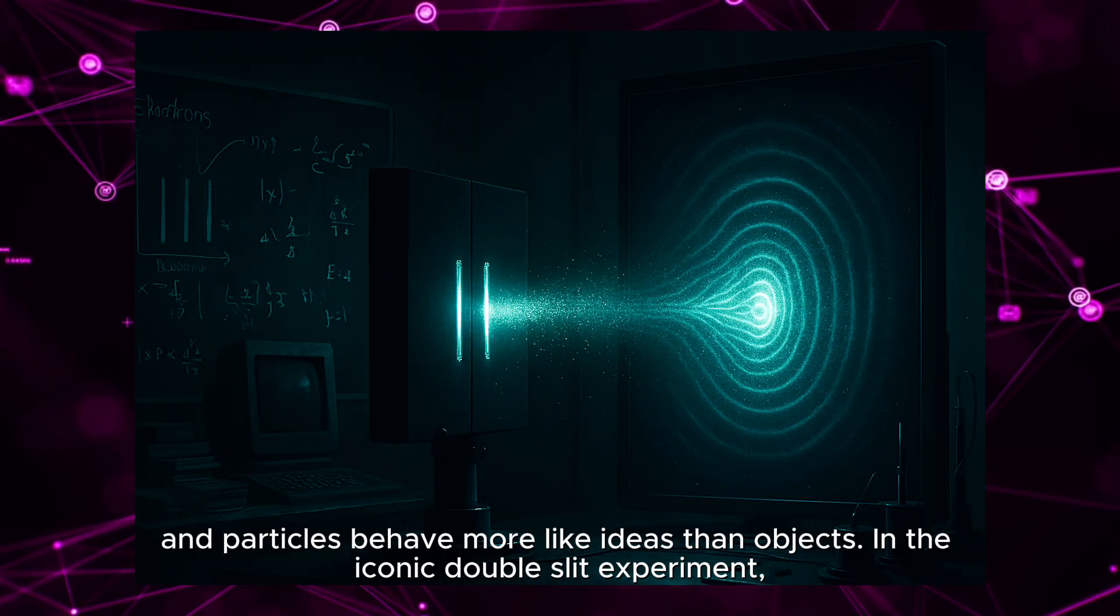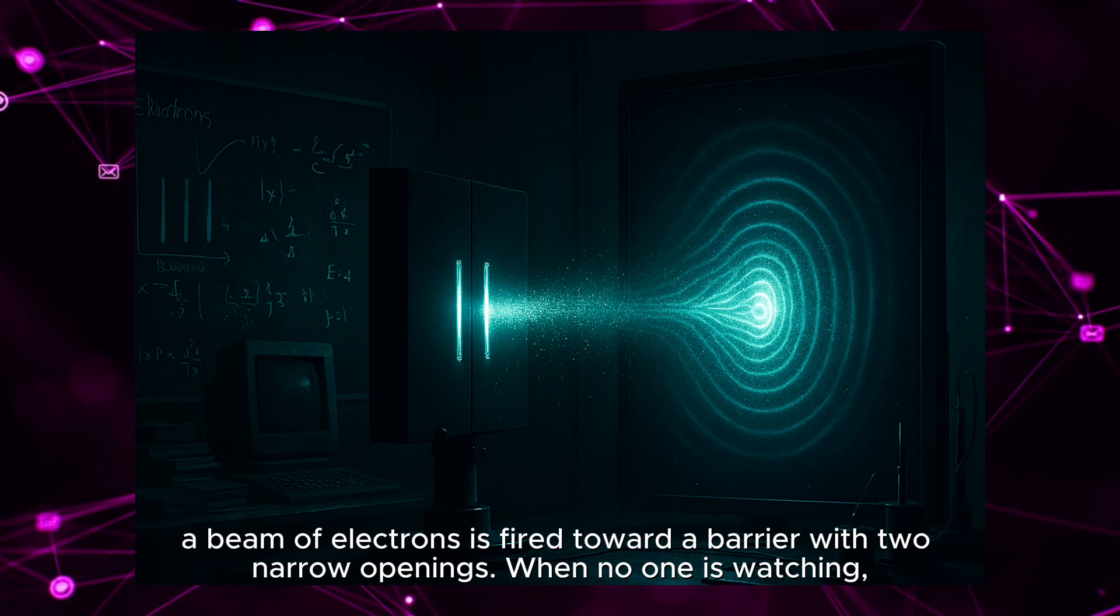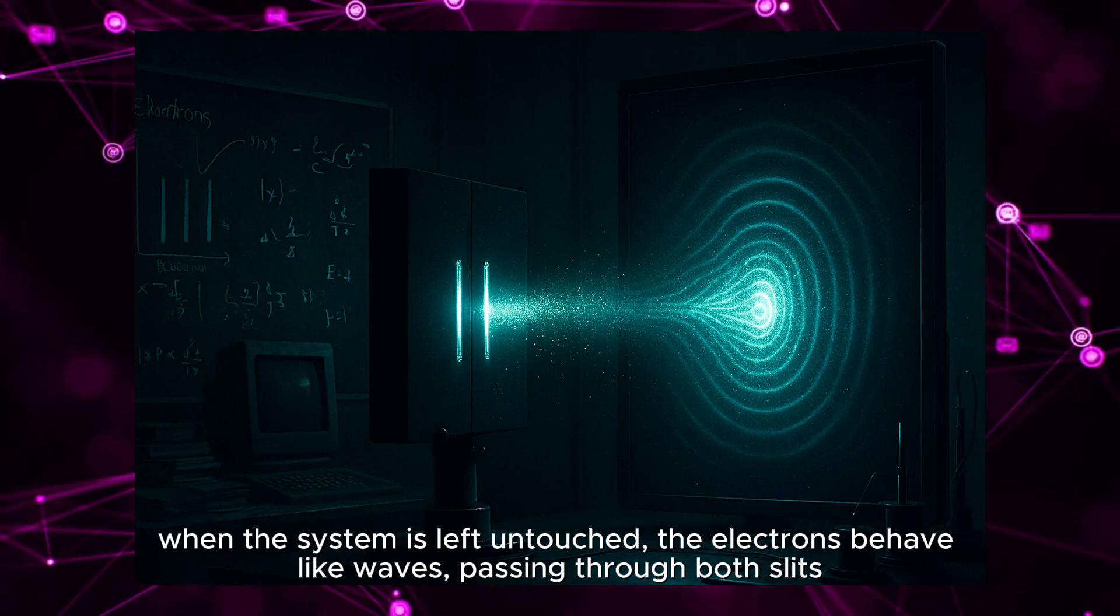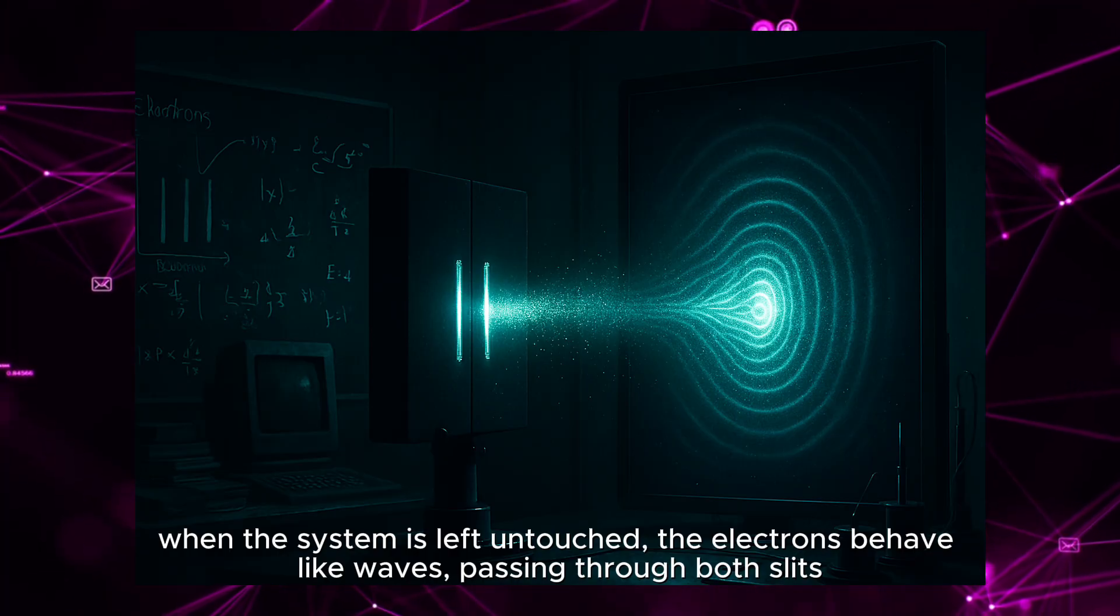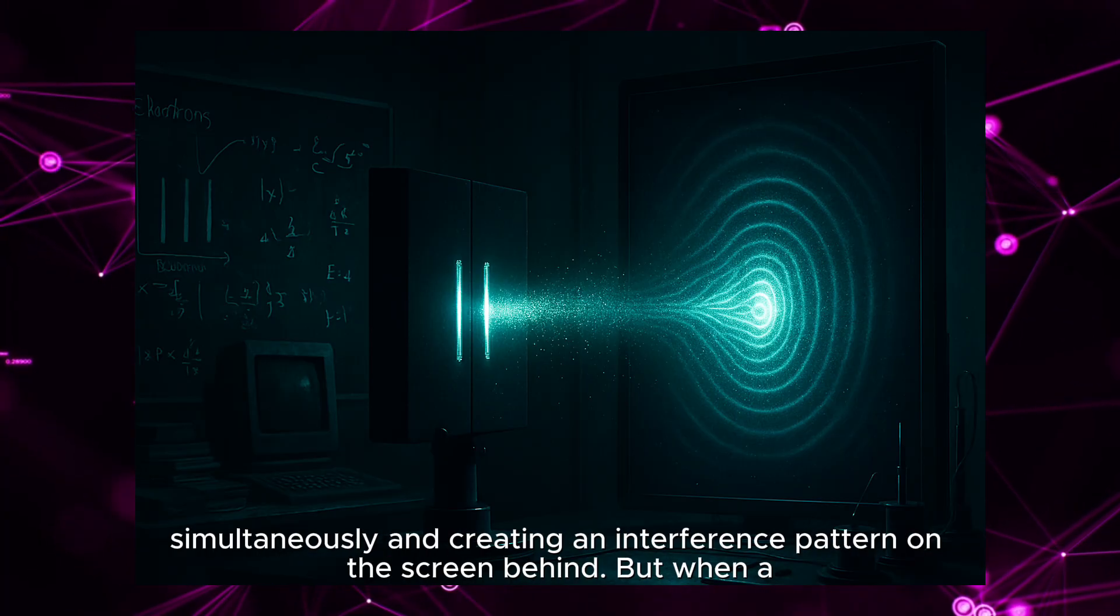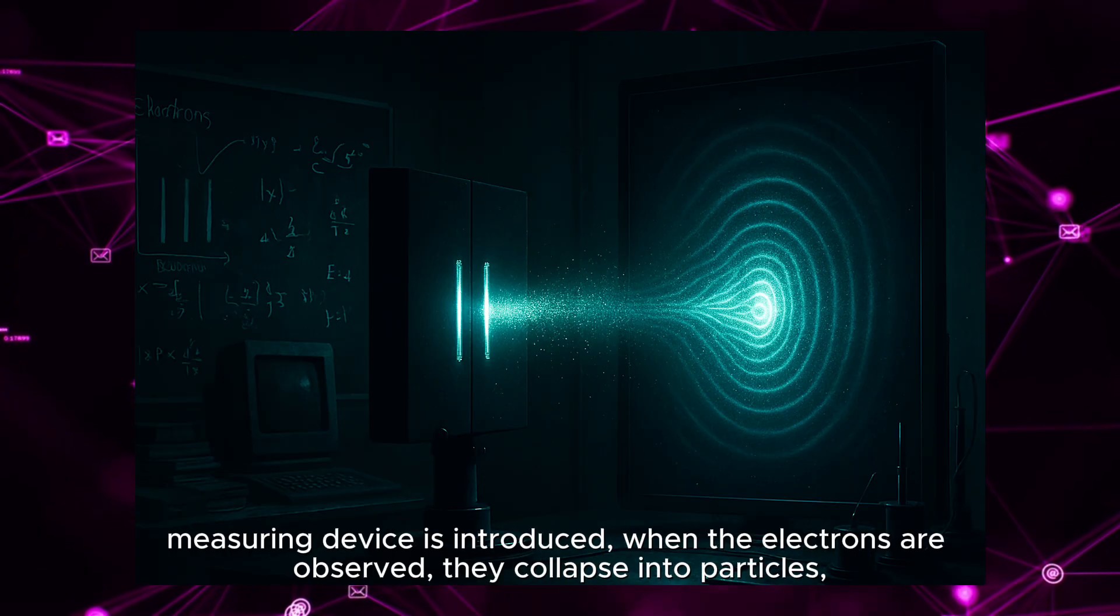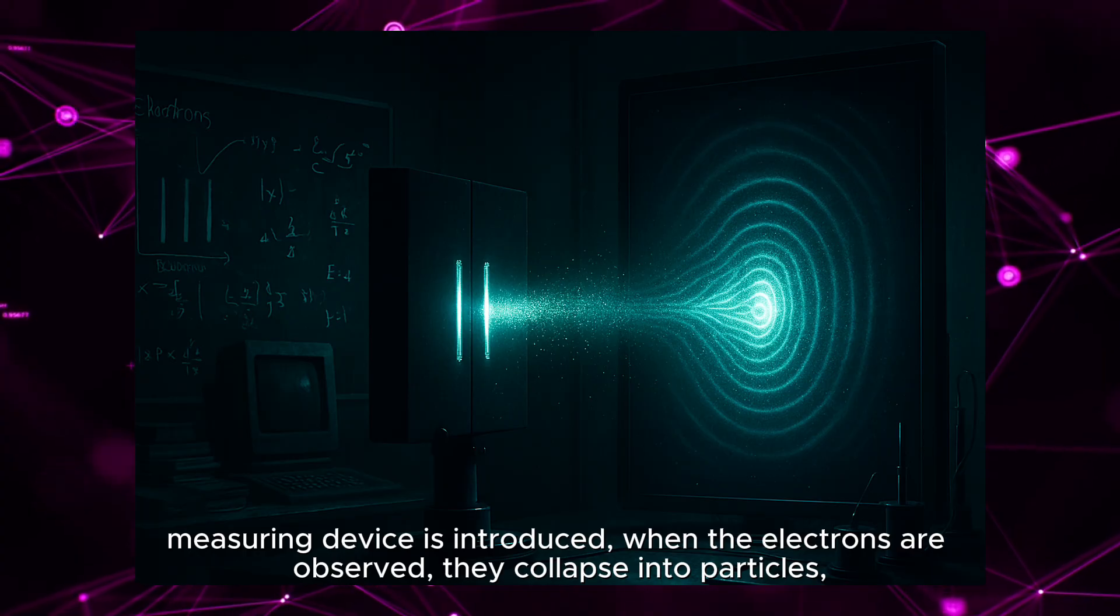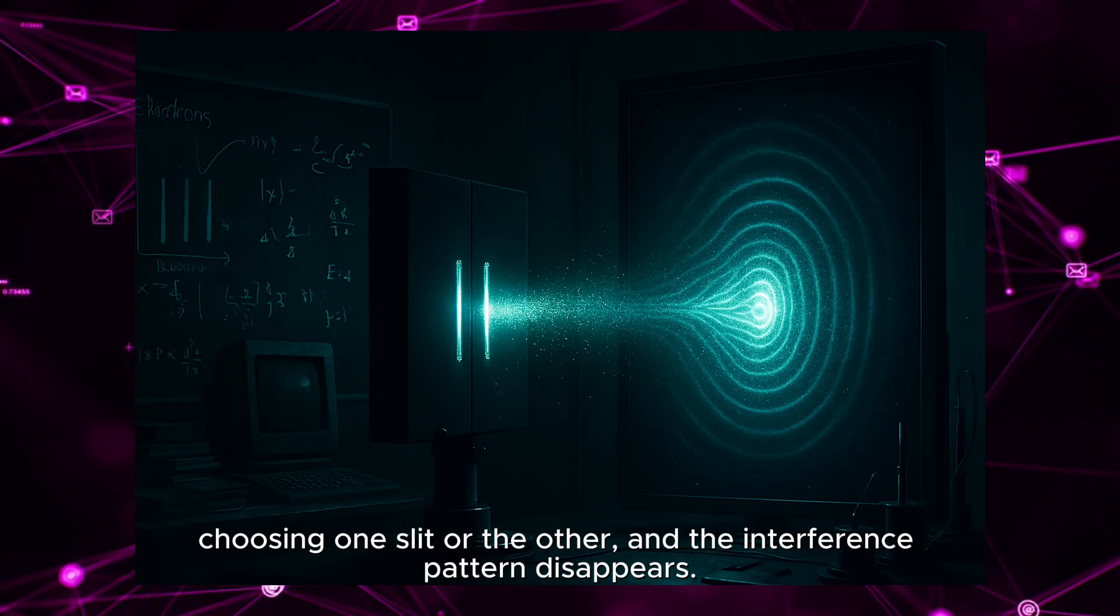In the iconic double-slit experiment, a beam of electrons is fired toward a barrier with two narrow openings. When no one is watching, when the system is left untouched, the electrons behave like waves, passing through both slits simultaneously and creating an interference pattern on the screen behind. But when a measuring device is introduced, when the electrons are observed, they collapse into particles, choosing one slit or the other, and the interference pattern disappears.